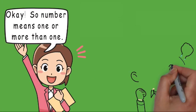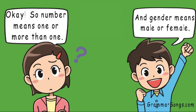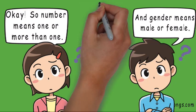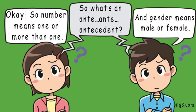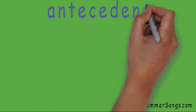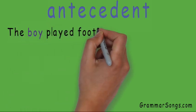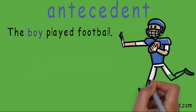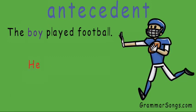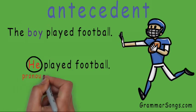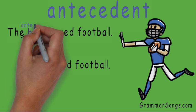So, number means one or more than one, and gender means male or female. But what's an antecedent? An antecedent is just a fancy name for the noun or proper noun the pronoun is referring to. For example, when I wrote 'the boy played football' and replaced the noun 'boy' with the pronoun 'he' — he played football — the pronoun 'he' was referring to the noun 'boy.' So 'boy' is my antecedent.